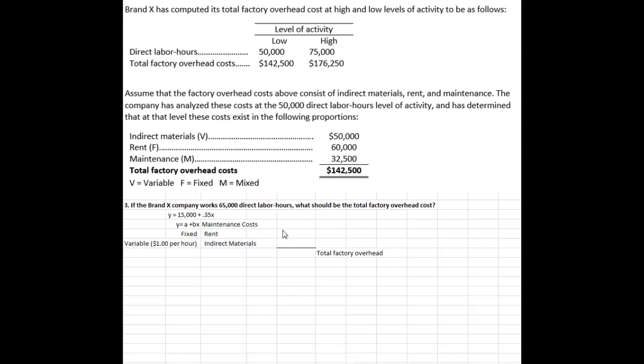The rent is fixed, so we know that it's going to be $60,000 no matter how many direct labor hours are worked. Pretty simple.